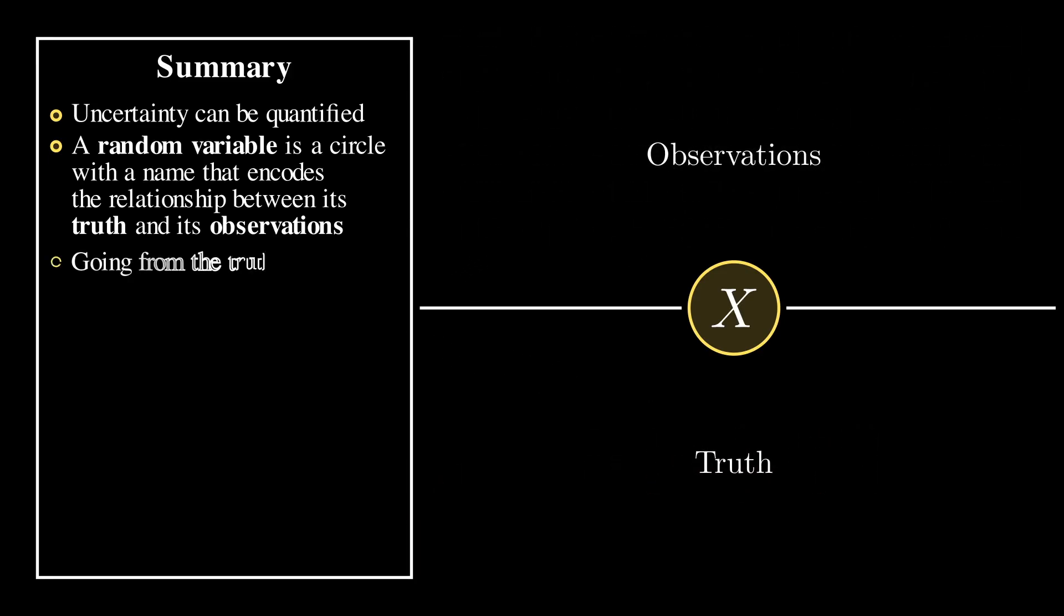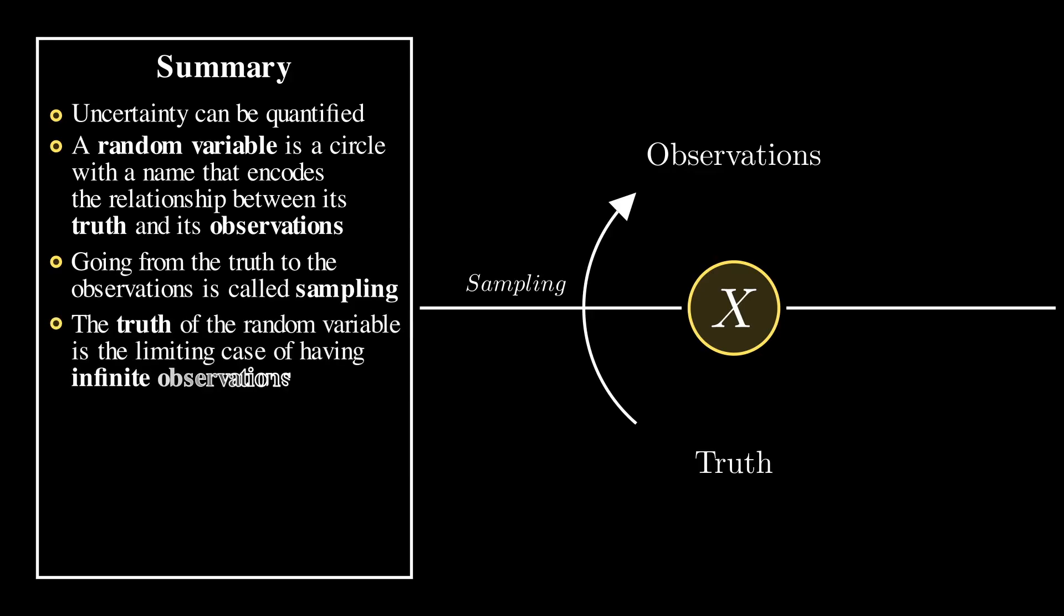Going from the truth to the observations is called sampling. The underlying structure of a random variable, its truth, is encoded in its probability density function, that is the limiting case of having infinite observations.